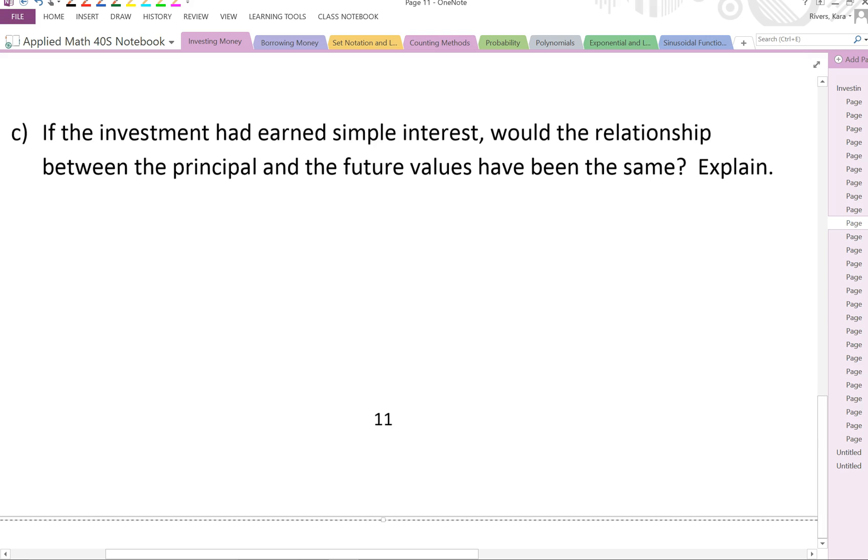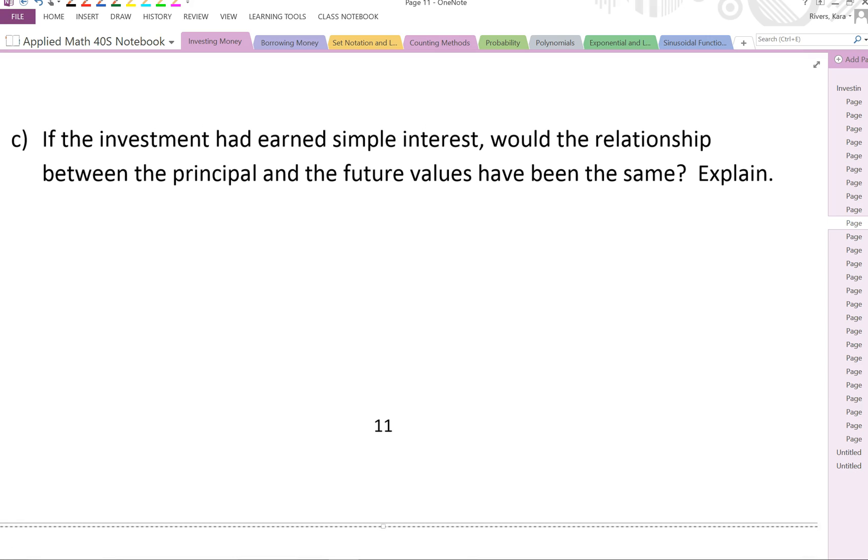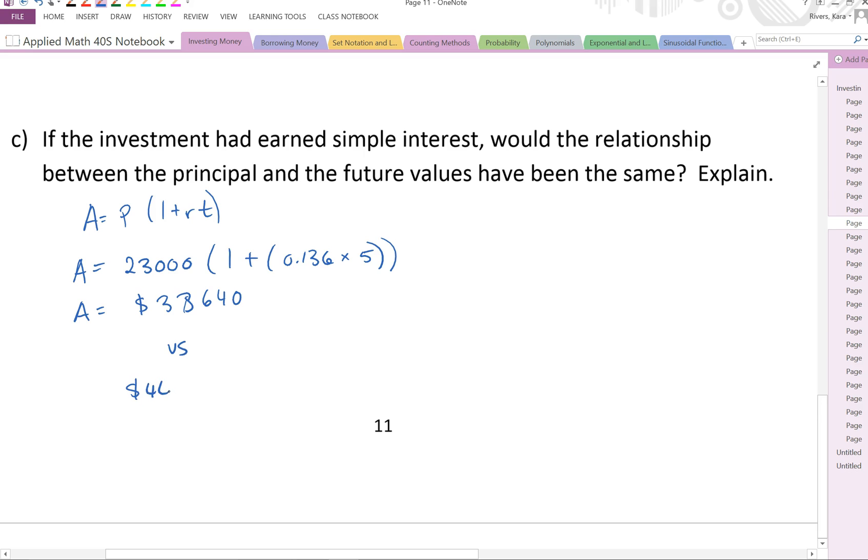For C it says if the investment had earned simple interest, would the relationship between the principal and the future values be the same? Well, let's go ahead and try to figure that out using our information. So we know our future value formula for simple interest is P, we can use this one, 1 plus RT. For 5 years, that would be 23,000 times 1 plus 0.136 times 5. And if you punch that into your calculator, you get a future value of $38,640. Compare that to our $44,405.87. You can see that that's significant. There's quite a bit more money made through compound versus simple.